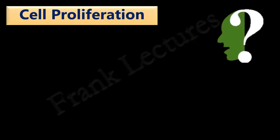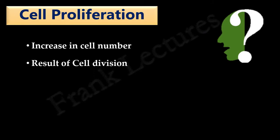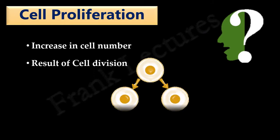What do you understand when we say cell proliferation? This means cell increases in number, and this increase in number is the result of cell division. Let's say this is a cell — it undergoes a single event of cell division.